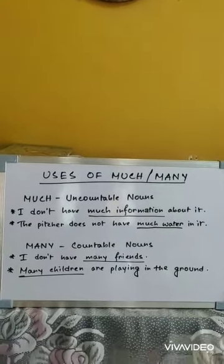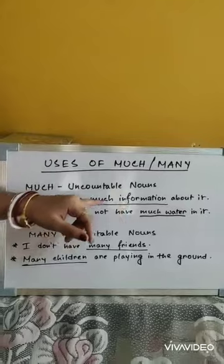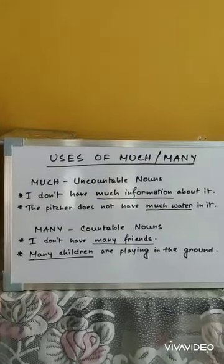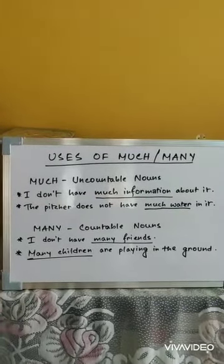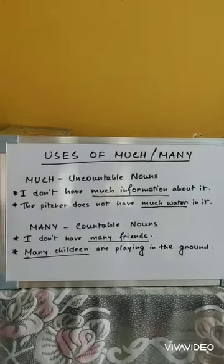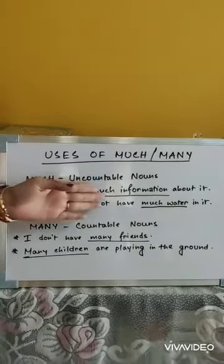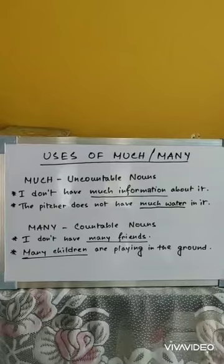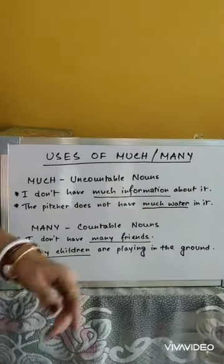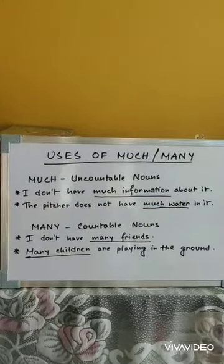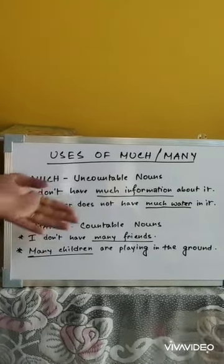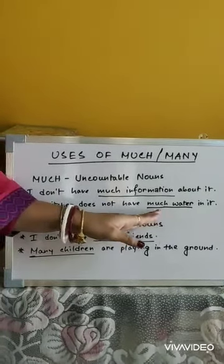For example: I don't have much information about it. Information, just like advice, we cannot count, so we use much before it. Another example: the picture does not have much water in it. Since we cannot count water, we use much before it.